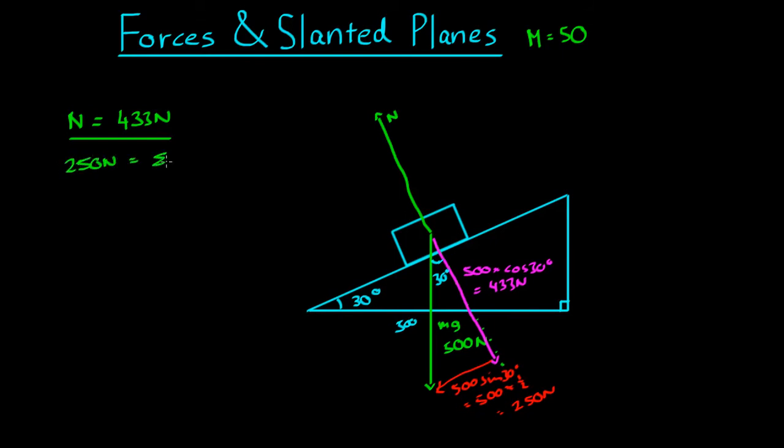And that force we said was 250 newtons, that equals the net force. Now the acceleration of the block, which is what we want to find. F equals ma, 250 equals 50a, 5 equals a. So acceleration equals 5 meters per second squared down the plane.